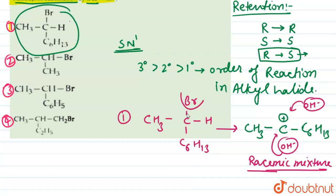Option number two has a similar compound with CH₃ and CH₃ groups — it is not optically active, so there is no R or S configuration. Therefore option two is also incorrect.